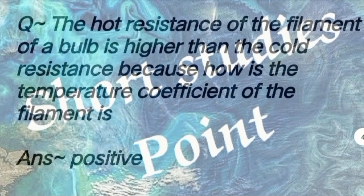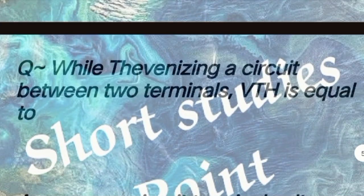Next question: An electrical circuit with 10 branches and 7 nodes will have how many loop equations? Answer: 4. Next question: The hot resistance of the filament of a bulb is higher than the cold resistance because the temperature coefficient of the filament is answer: positive.